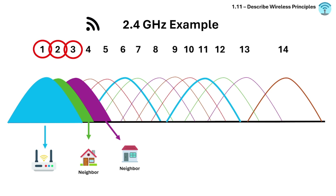Here is a real-world example of a 2.4 GHz channel. Imagine you live in an apartment building with multiple Wi-Fi networks. Your router is set to channel 1, your neighbor's router is on channel 2, and another neighbor uses channel 3. All of these Wi-Fi networks will overlap and interfere with each other.